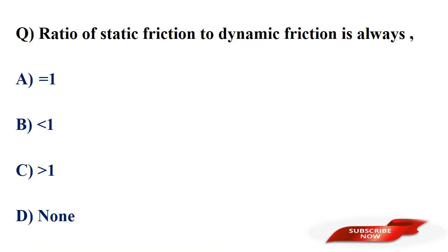The ratio of static friction to dynamic friction is always? Options: equal to 1, less than 1, greater than 1, none of those. Answer: option C, greater than 1. The ratio of static friction to dynamic friction is always greater than 1.